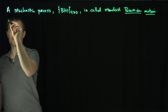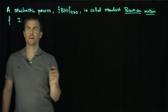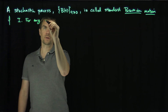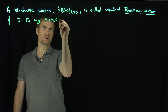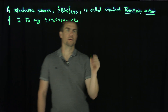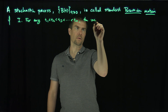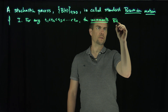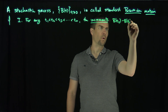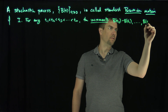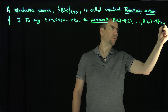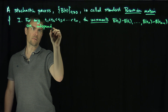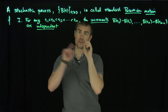A couple things are true. Condition one is that for any partition — for any t1 less than t2 less than t3 less than tn — the increments b(t2) minus b(t1), all the way down to b(tn) minus b(tn minus 1), are independent. So Brownian motion has independent increments.